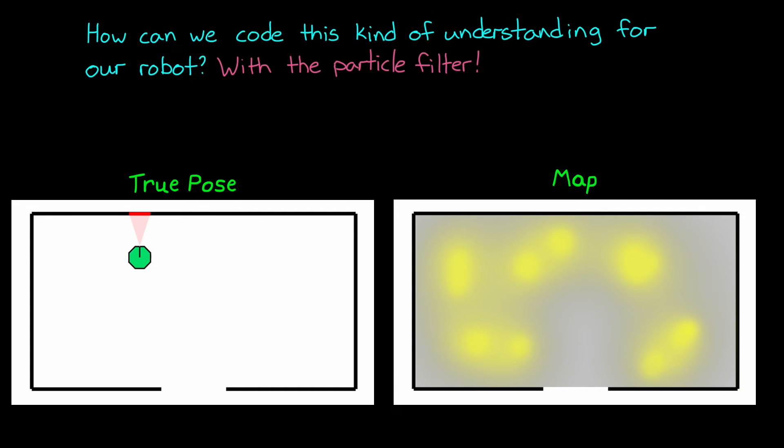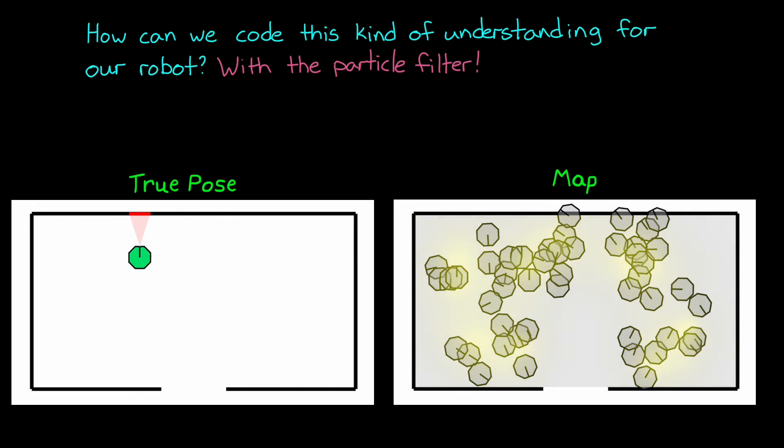Now we don't want to keep all of the low probability particles in the filter since that would use up computational resources on unlikely poses. And we can also get into a situation where they cause the filter to never converge. Therefore, we're going to resample the particles according to this new probability distribution. This will place more particles in the poses that are more likely and less particles everywhere else. This random, discrete resampling of the probability distribution is why this type of localization is also referred to as Monte Carlo localization.